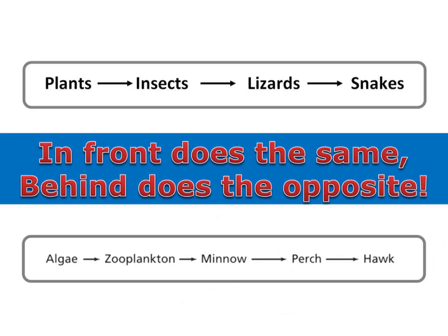To understand what I mean by in front and behind, think of yourself standing on one of the organism names and pointing in the same direction as the arrows. In front of you means further down the food chain, and behind you means towards the beginning.